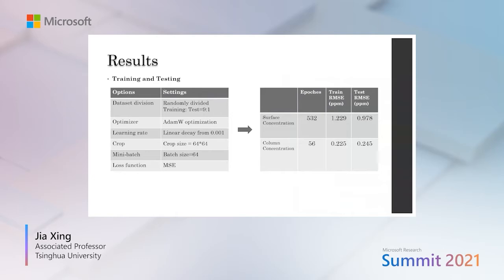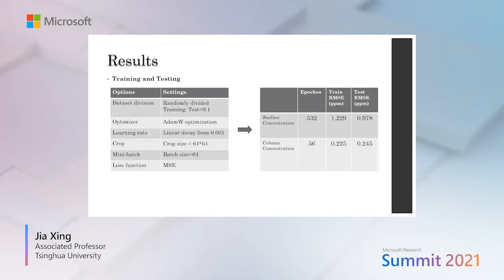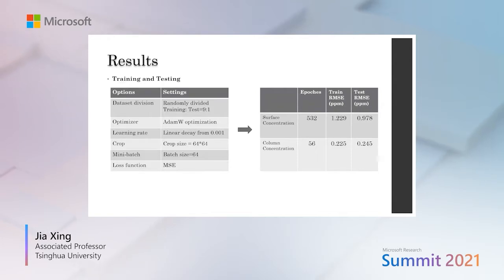For training and testing, we divide the dataset into 10 shares — 9 for training and 1 for testing. We use AdamW optimization as the optimizer, with learning rate starting at 0.001 with linear decay. We use randomly cropped patches to enhance the model's domain transfer ability, and train using log-MSE loss. After hundreds of epochs, we achieved very good performance for both surface and column concentrations, with RMSE close to 1 ppm — quite good given the baseline CO2 concentration of around 400 ppm.